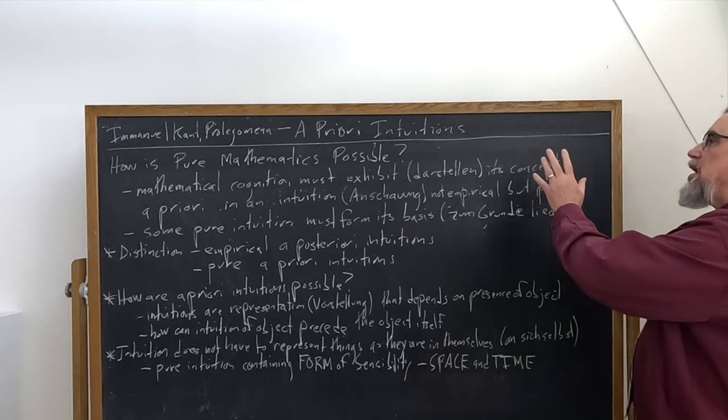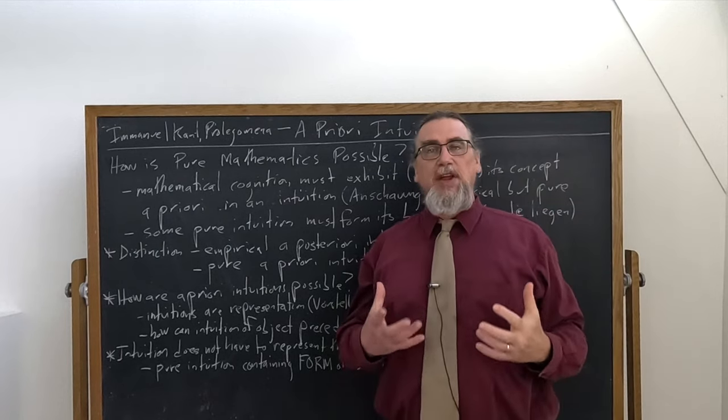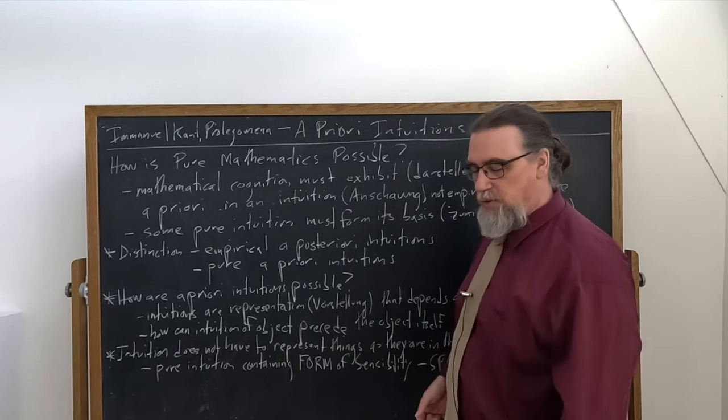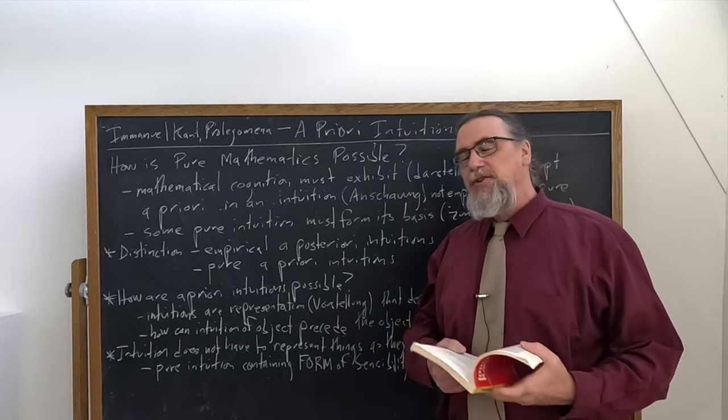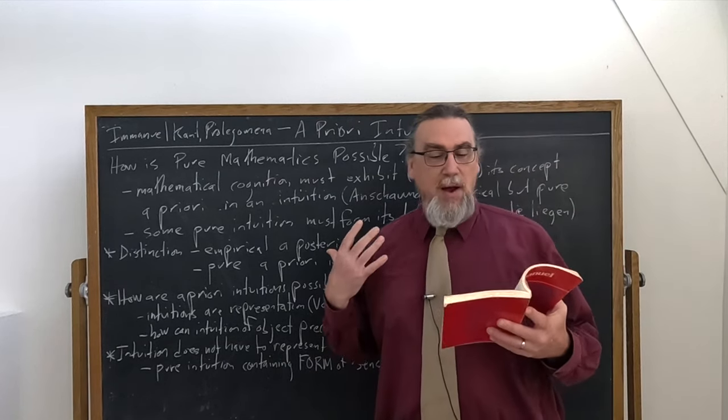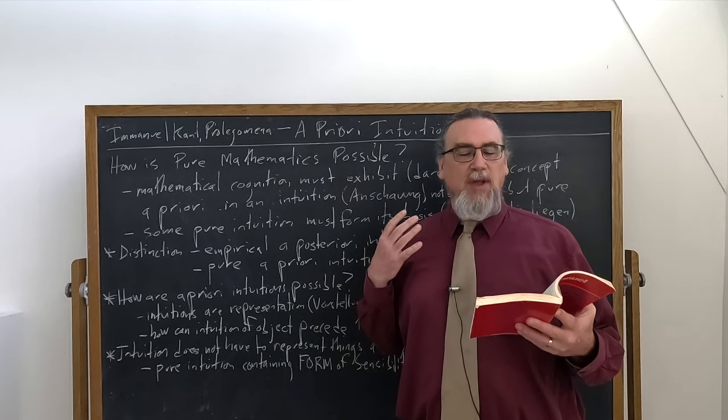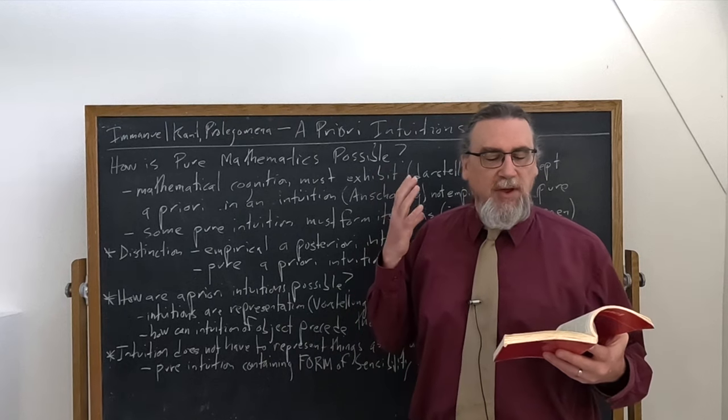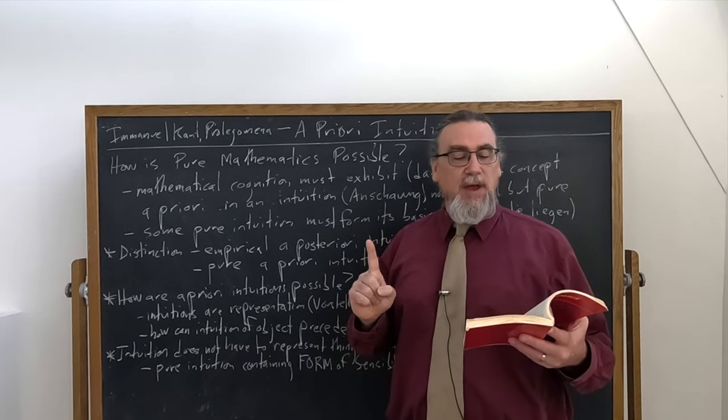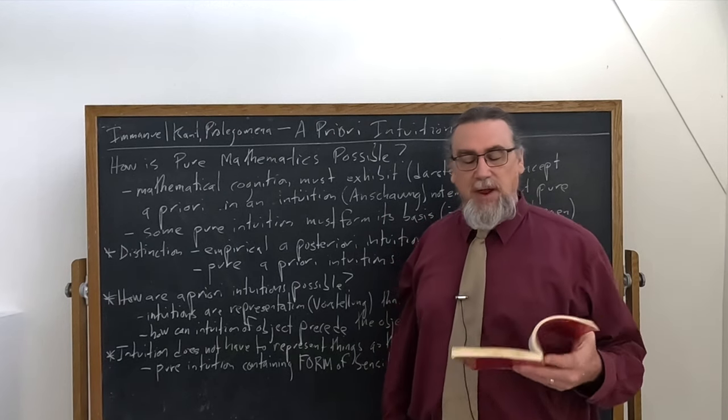This is where a lot of people get tripped up in reading Kant, whether it's the Prolegomena or the first critique and thinking about the nature of mathematics, in part because they already have associations with this term intuition, which is how we translate Anschauung from German into English. And so he tells us that mathematical cognition must exhibit, Darstellen, its concept, its Begriff, in two important intersecting ways.